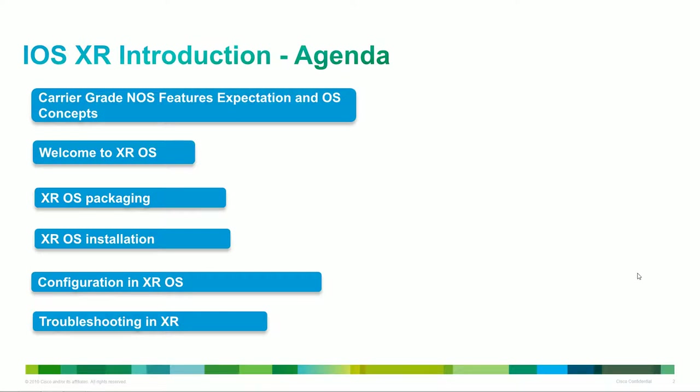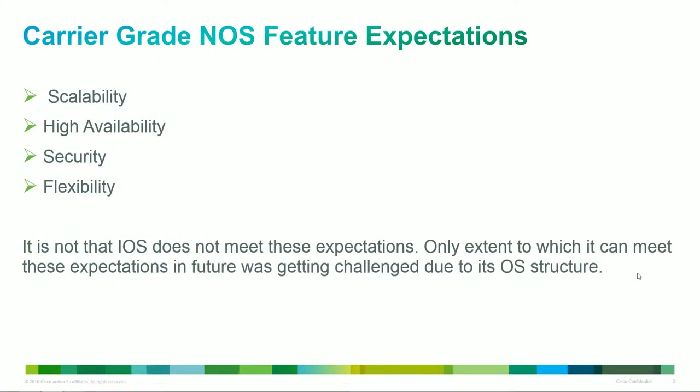Before we get to that, our topics are going to be the packaging, the installation, the configuring, and troubleshooting of XR. What does carrier-grade mean? All that really means is it's an OS that pays more attention to things like scalability, high availability, security, and flexibility. That's not to say that current IOS does not — it's just not as fluid, dynamic, or flexible as IOS XR.